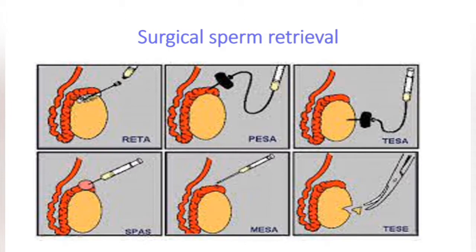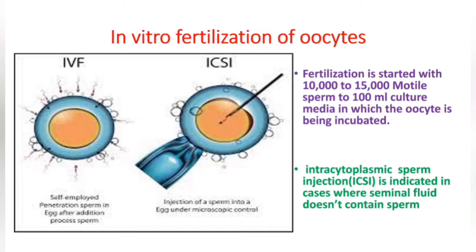Fertilization is started with 10,000 to 15,000 motile sperms in 100 ml culture media in which the oocyte is being incubated. Intracytoplasmic sperm injection (ICSI) is indicated in cases where seminal fluid does not contain sperm.